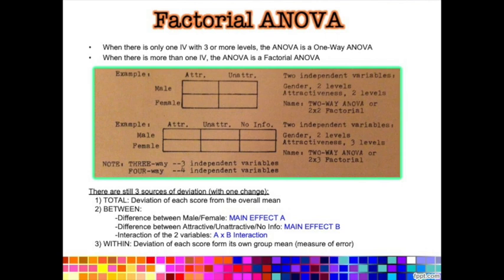With a factorial ANOVA there are still three sources of deviation, with one change. The sum of squares total is calculated the same way as a one-way ANOVA, looking at each score's deviation from the overall mean. The sum of squares within is also the same — deviation of each score from its own group mean, still our measure of error. Because we have two IVs, we label one IV A and one IV B. IV A is gender with levels male and female; IV B is attractiveness with levels attractive, unattractive, and no info.